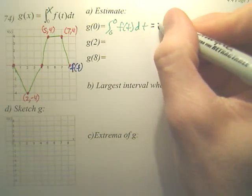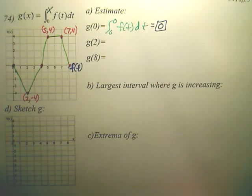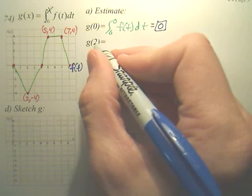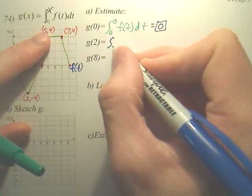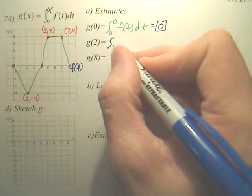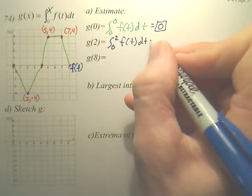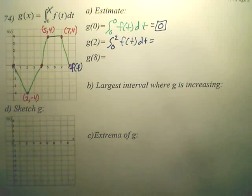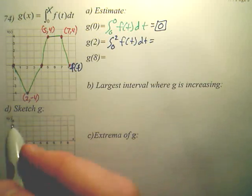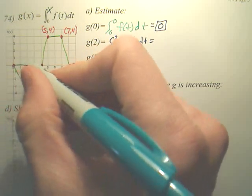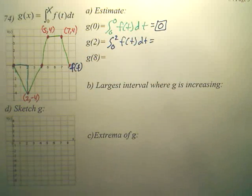Next, if I want g(2), well we just go to this - x is 2, so you go from 0 to 2 of f(t) dt. I want to find that area. Can't you just go to this graph and find the area from 0 to 2? Now since it's below the x-axis, isn't it going to be a negative area?